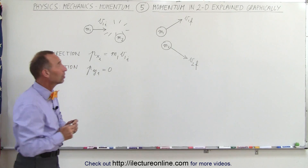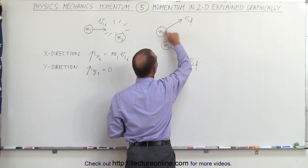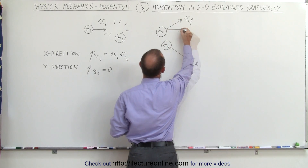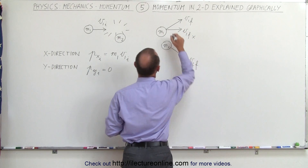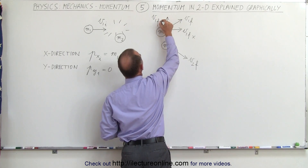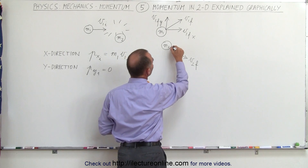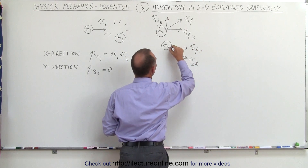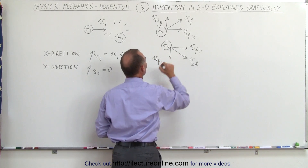Which means that after the collision, this billiard ball moving in its direction will have an x-component, v sub 1 final in the x-direction, and it will have a y-component, v sub 1 final in the y-direction. And likewise, this billiard ball will have an x-component, v sub 2 final in the x-direction, and a y-component, v sub 2 final in the y-direction.